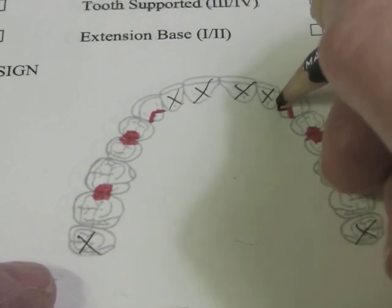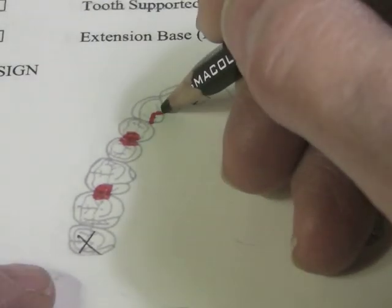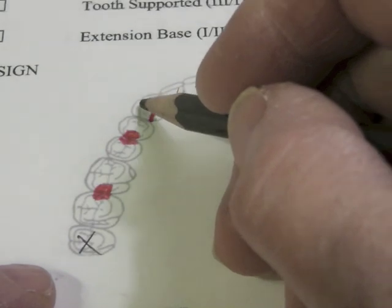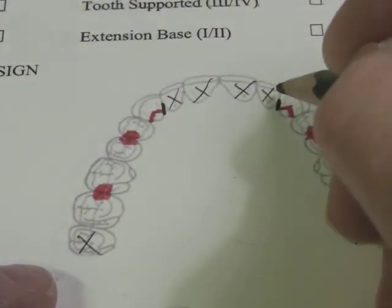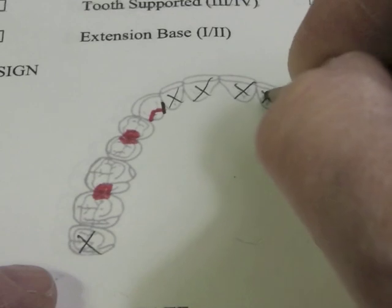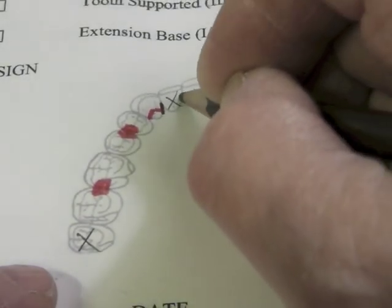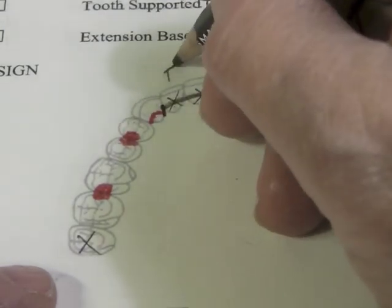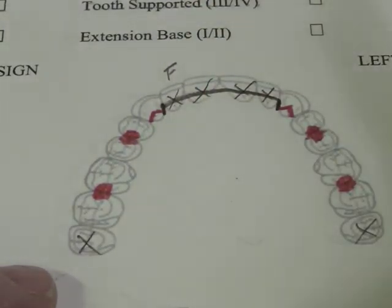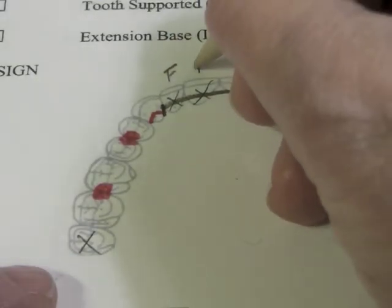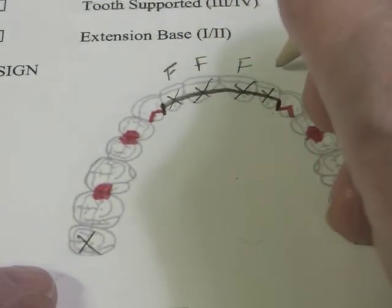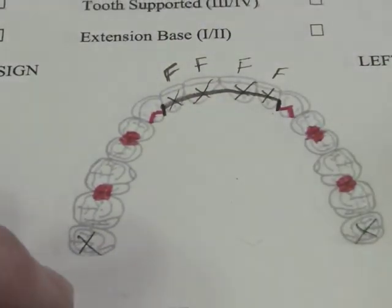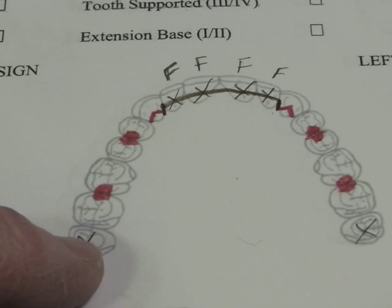we will have a guide plate on the mesial surface of the canines just behind the cusp tip. And the facing is drawn with a straight line across from guide plate to guide plate. And then we have four F's out on the cast. Our textbook says to use lead pencils on the cast to show that we're having facings.